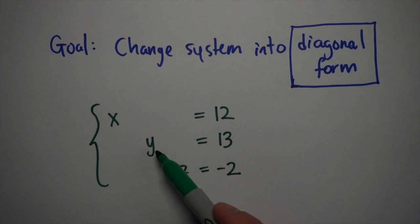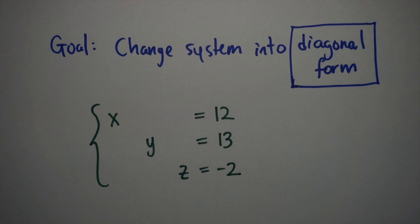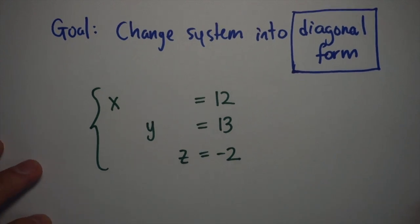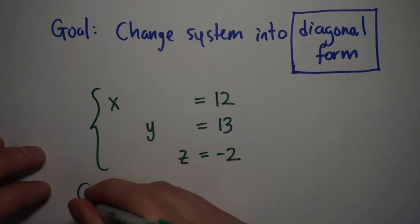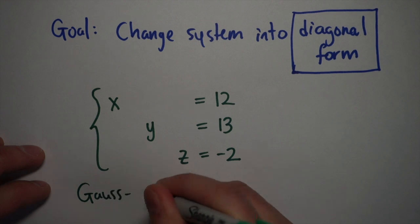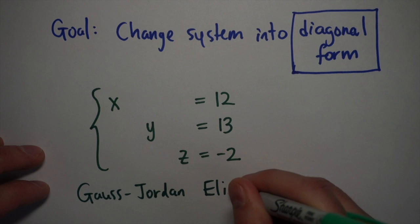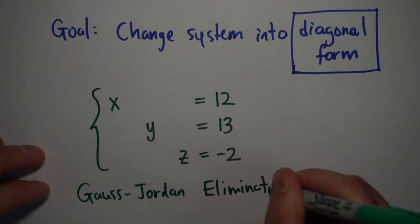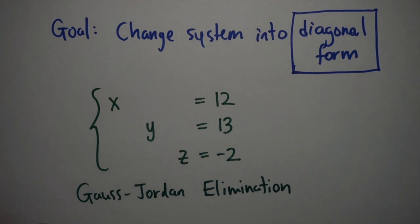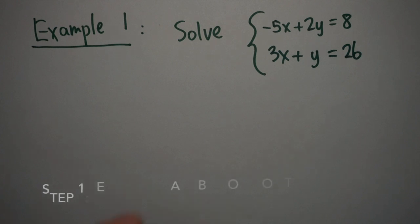The ultimate goal of doing these actions is to get my system into what we call diagonal form, which is all the variables by themselves, and then their solutions on the other side. The process of taking a system of equations into diagonal form is called Gauss-Jordan Elimination. It's a very algorithmic way of solving these systems. So let's look at an example.